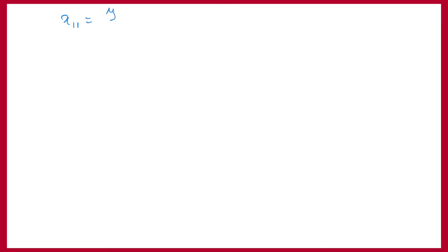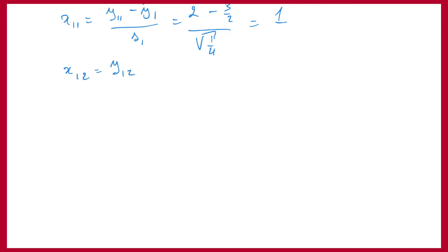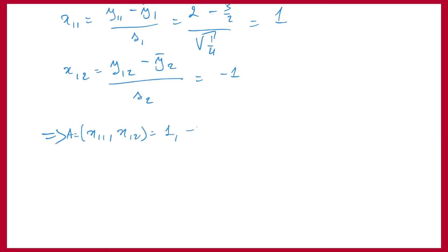So in our case, we get the following. x11, the first component of observation A standardized, is the observation minus the empirical mean divided by the standard deviation. Because the observation is 2, the empirical mean is 3/2, and the variance was 1/4, we find this equals 1. For the second component x12, we take y12, subtract the empirical mean, divide by the empirical standard deviation, and find −1. Continuing like that, A = (1, −1) and B = (−1, 1).